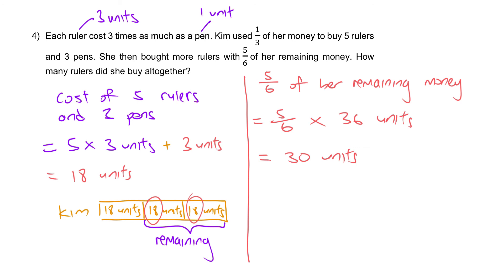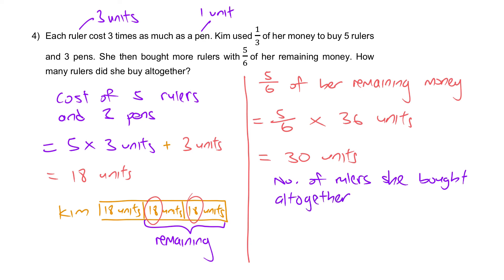So we can go straight to the answer: number of rulers she bought altogether equals 30 divided by 3, giving 10 rulers from the second purchase. However, this is not the final answer because the question asks how many rulers she bought altogether. She already bought 5 rulers at the beginning, so the total is 10 plus 5 equals 15 rulers altogether.